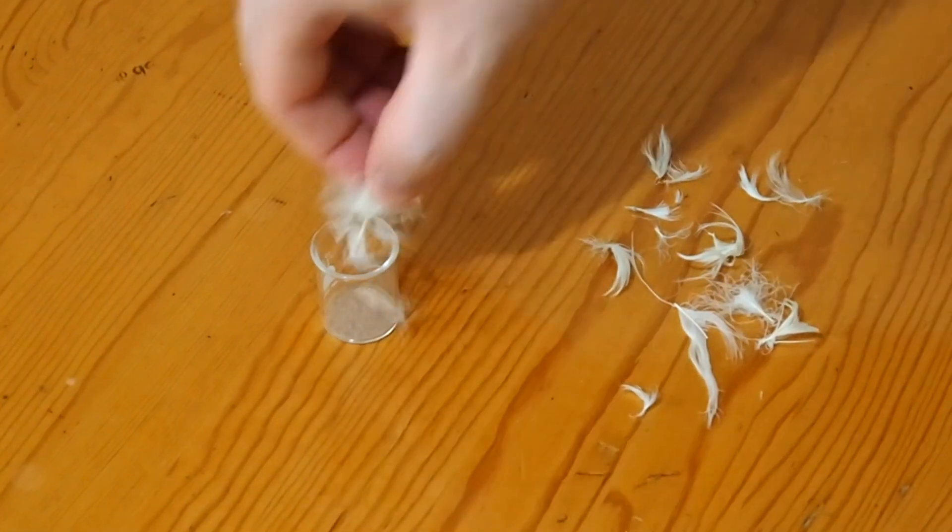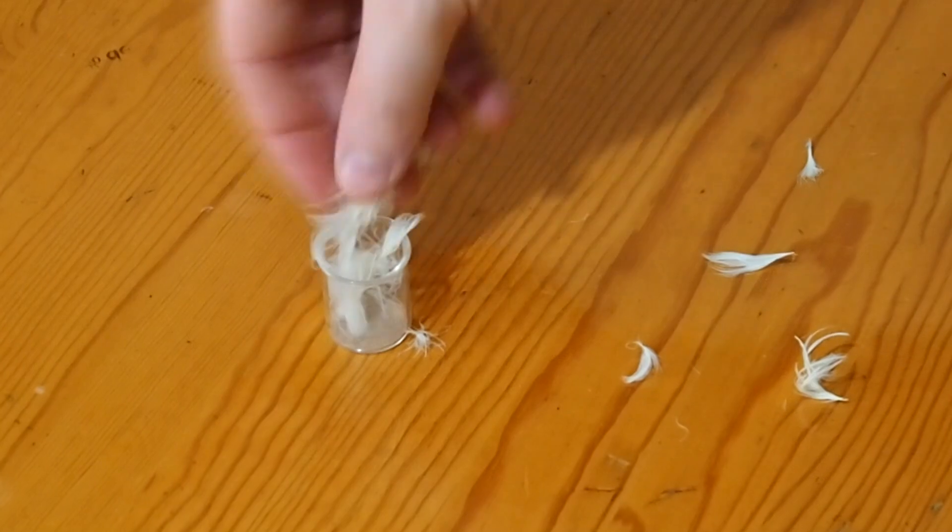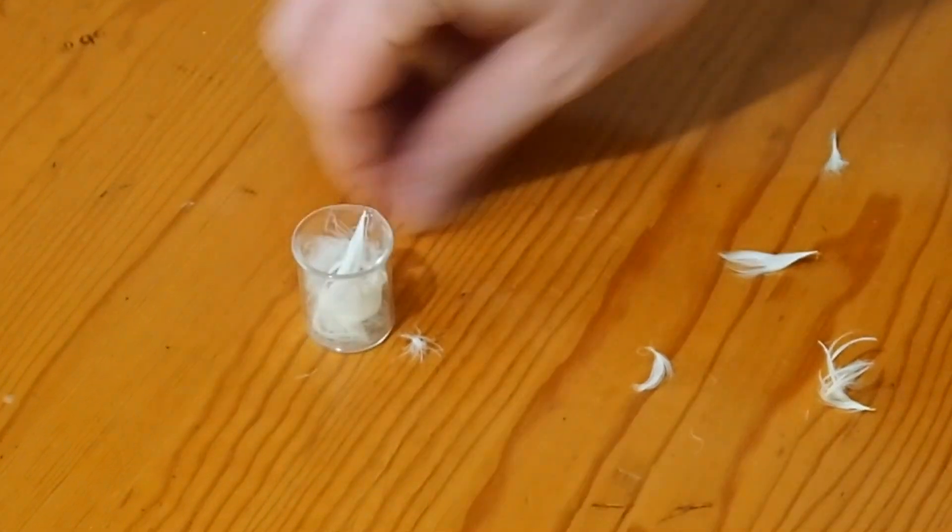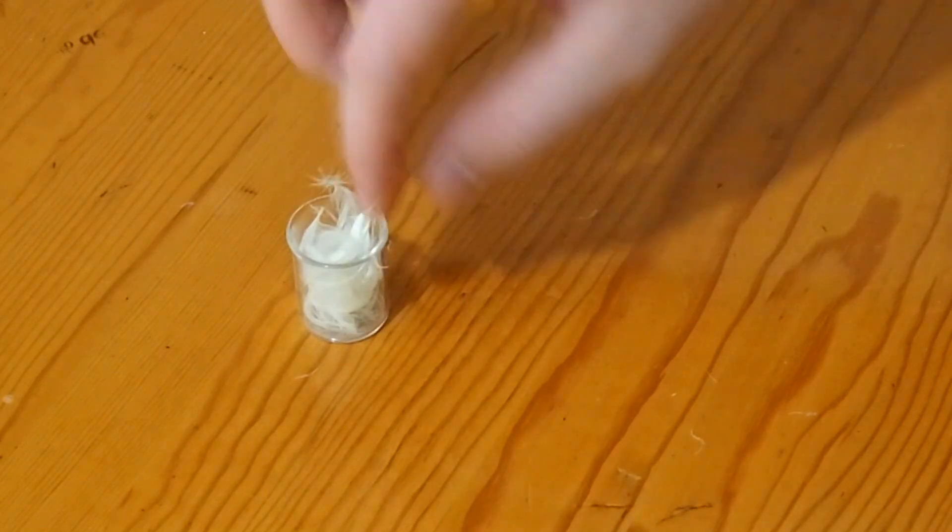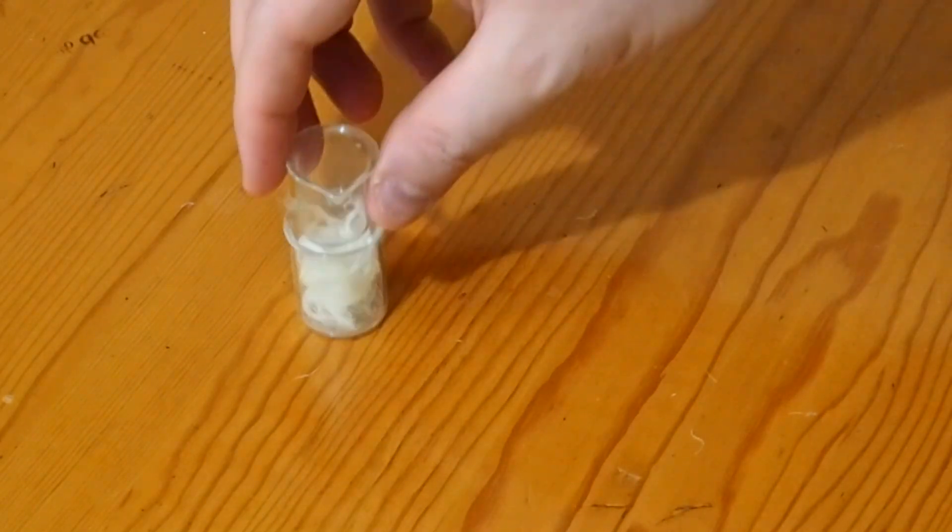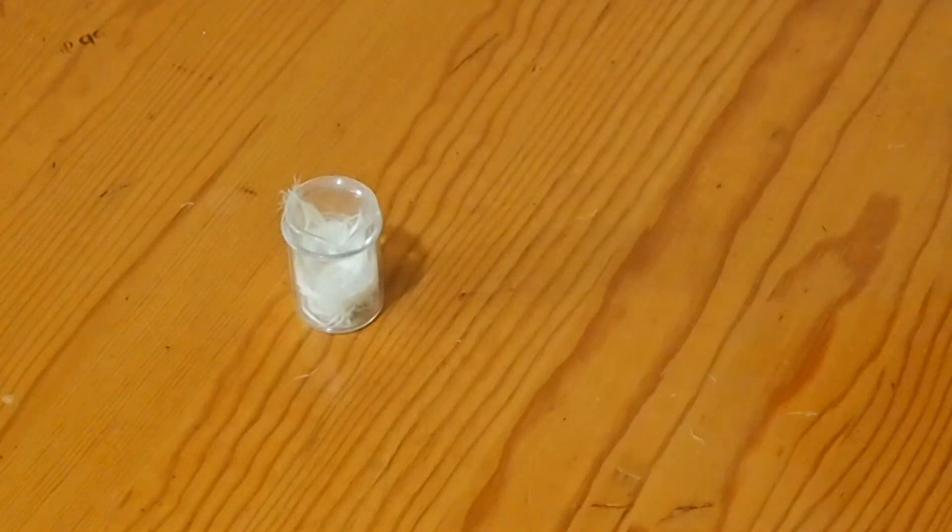So they measure feather density, like this, with a tube and a weight. The commercial standard, called Fill Power, is the number of cubic inches filled by one ounce of material. So they take one ounce of feathers and put it in a tube with a weight on it.